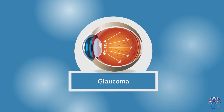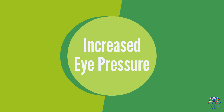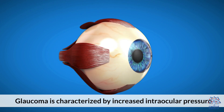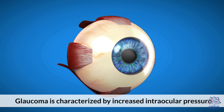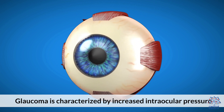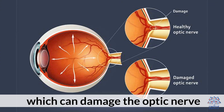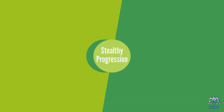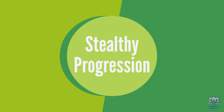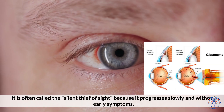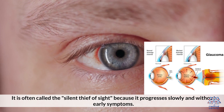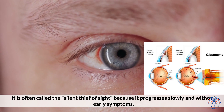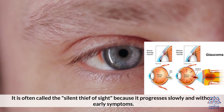2. Glaucoma — Increased Eye Pressure. Glaucoma is characterized by increased intraocular pressure, which can damage the optic nerve. It is often called the Silent Thief of Sight because it progresses slowly and without early symptoms.